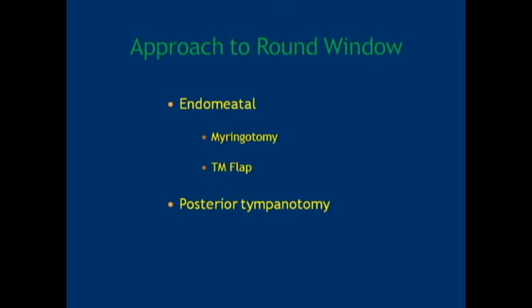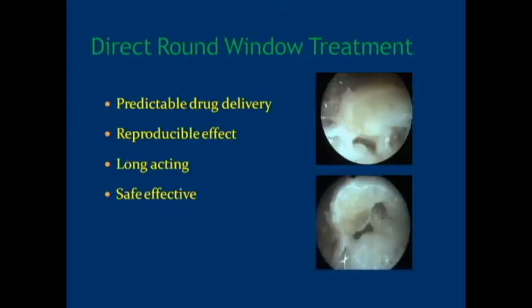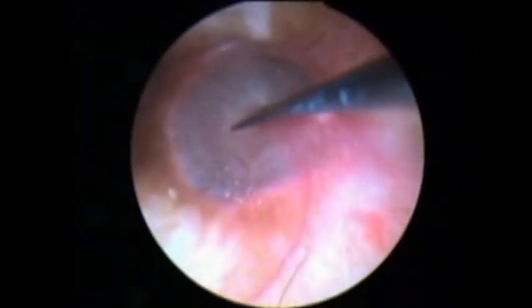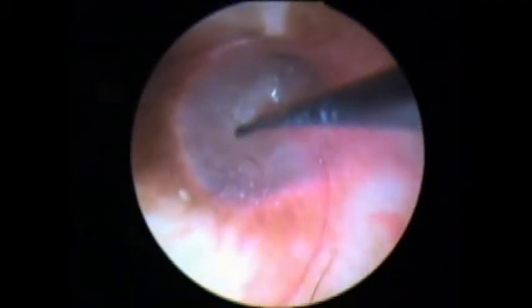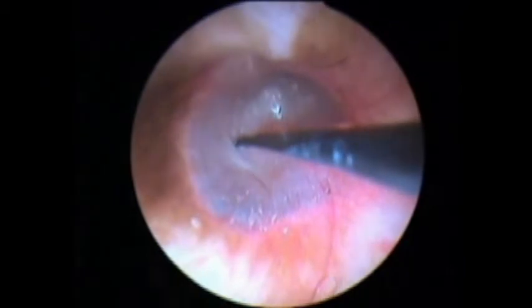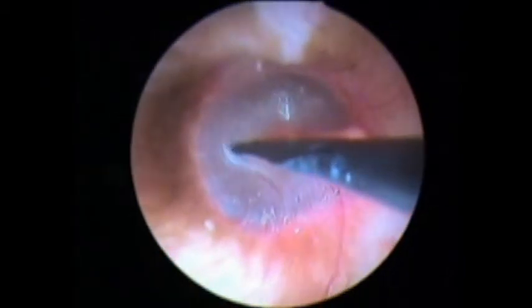Intratympanic therapy for inner ear disease is a direct method of delivering drug to the round window. It is indicated in Meniere's disease not responding to medical treatment, sudden sensorineural hearing loss, and intractable tinnitus.